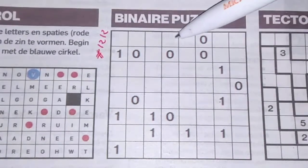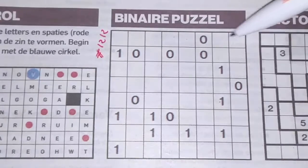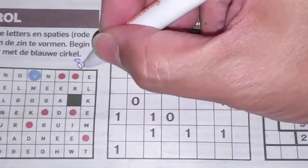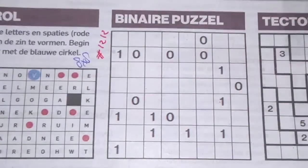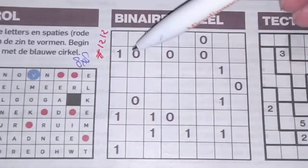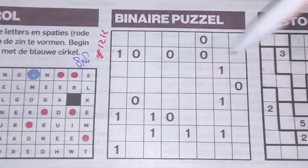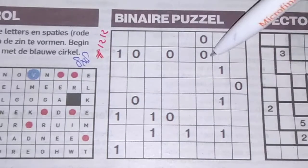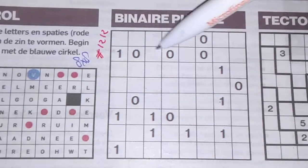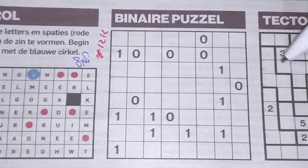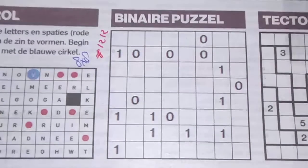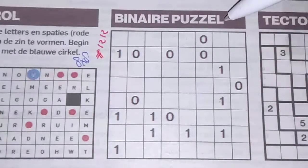1, 2, 3, 4, 5, 6, 7, 8 — it's an 8 by 8 binary puzzle. That means in a row or in a column, there are always four O's and four 1's. Alright, so let's get started.